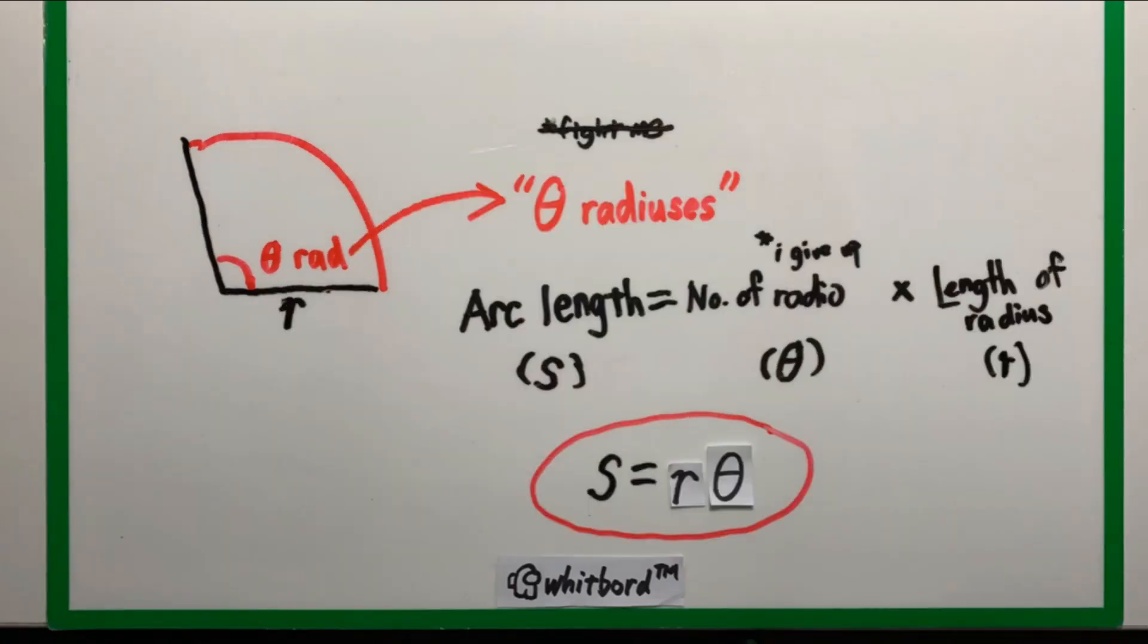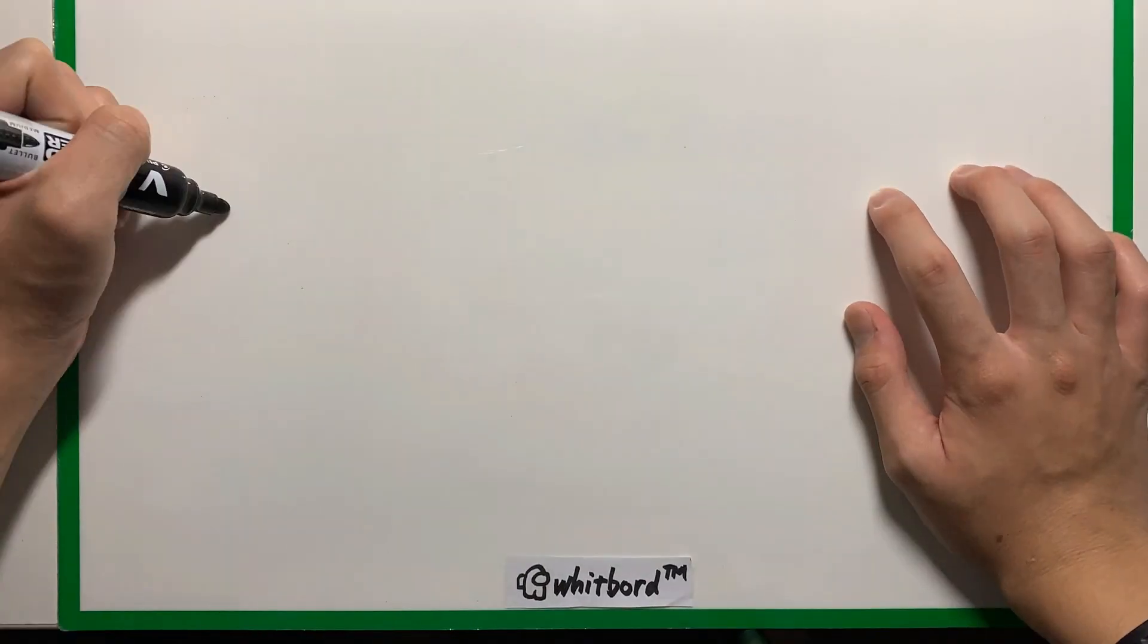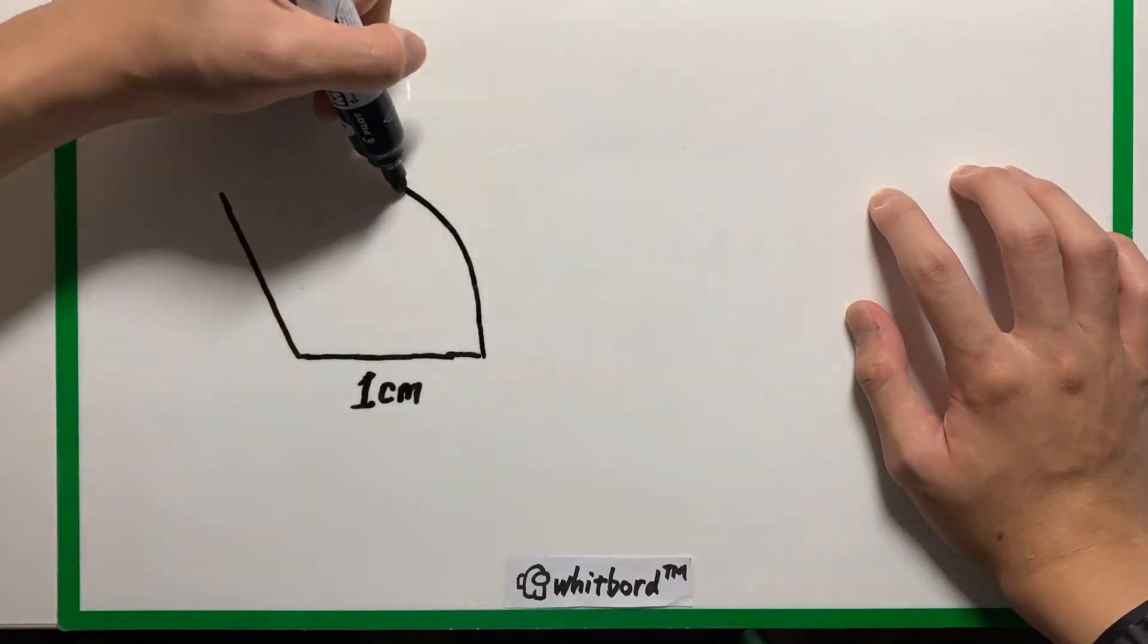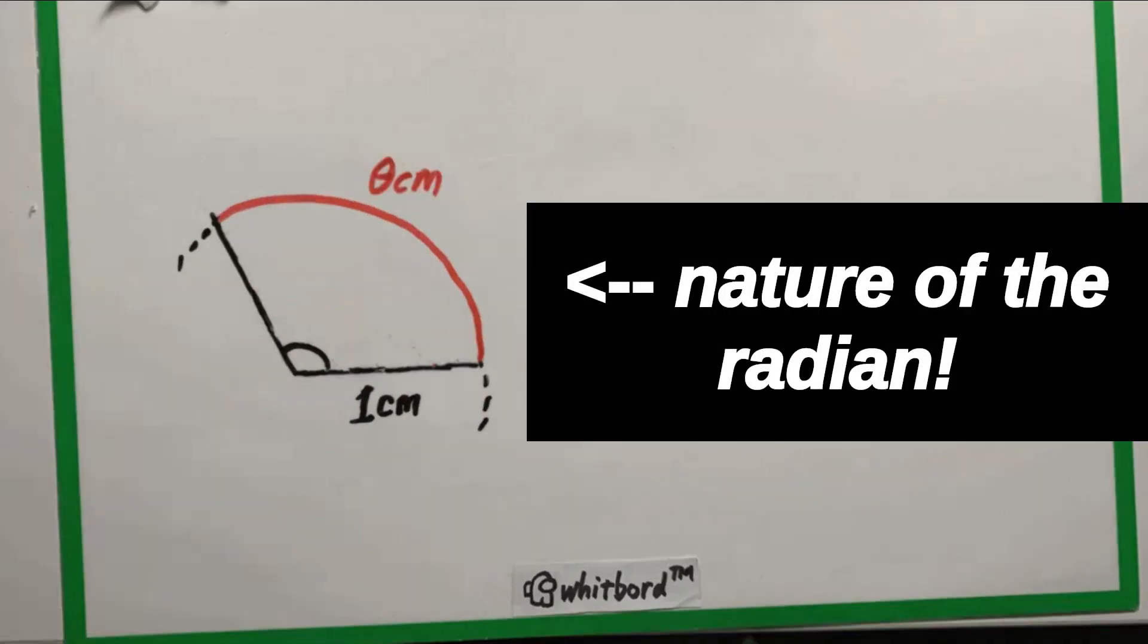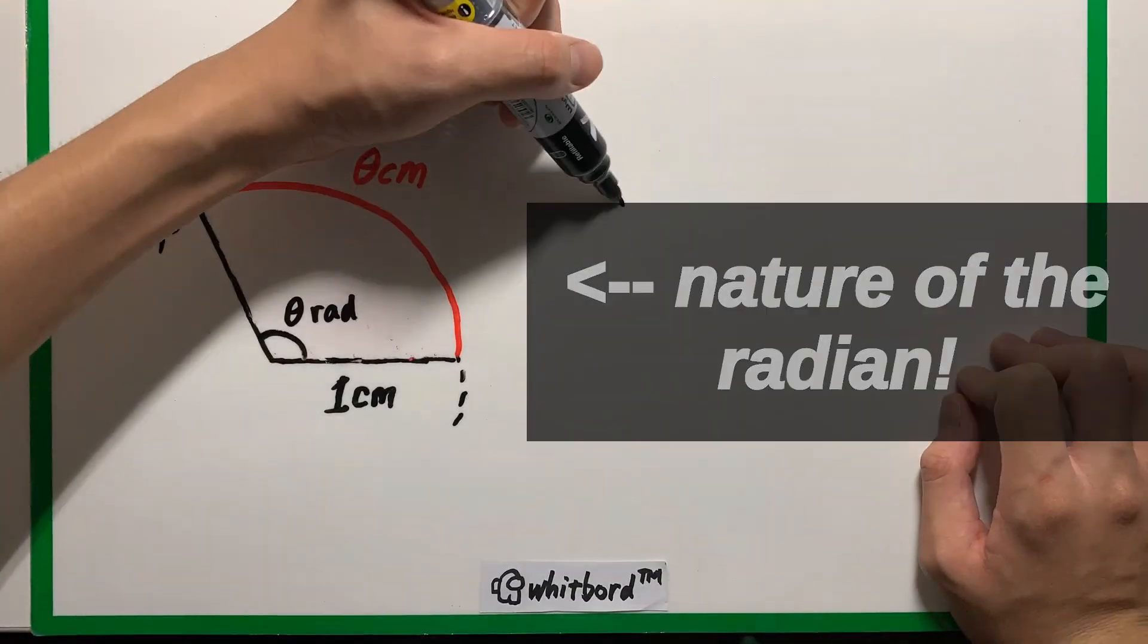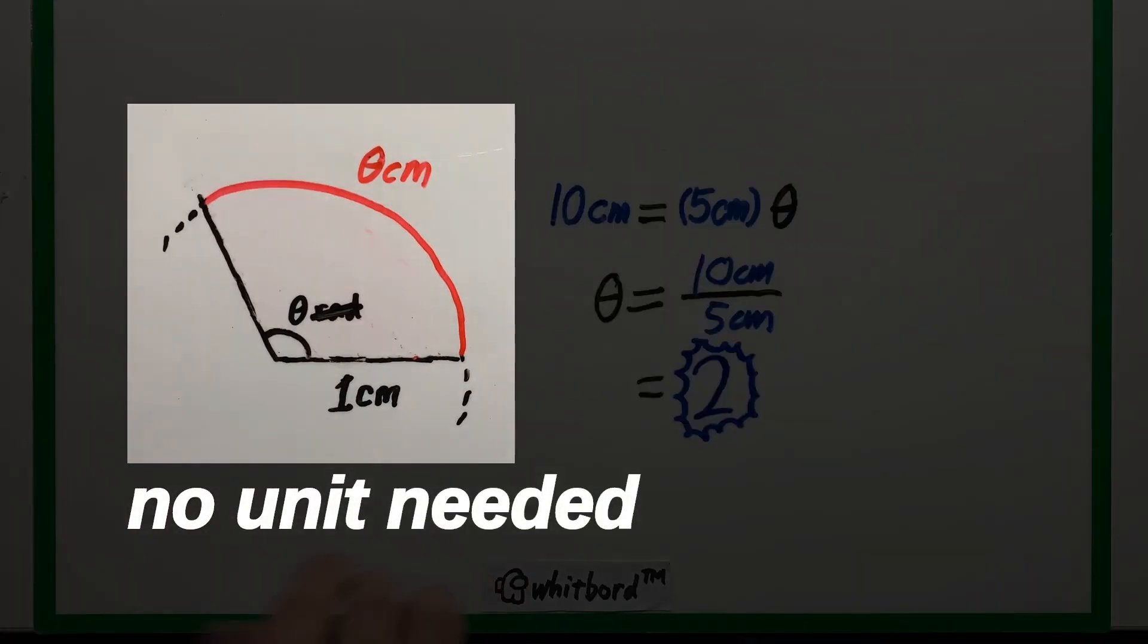But look, the formula becomes way simpler all of a sudden. This is how powerful the radian truly is. We can directly describe an angle as a length. And that's why the radian is so natural. In fact, it's so natural that most of the time the radian doesn't even have a unit. It's just a number.